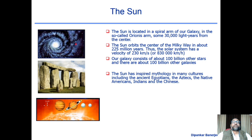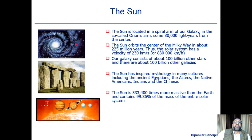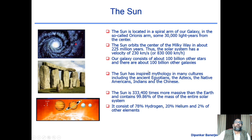The sun is 330,000 times more massive than the Earth and contains 99.86% of the mass of the entire solar system. In this many-body system, the sun is so massive that all other objects are really, really tiny. The center of mass of the entire solar system is very, very close to — actually inside — the sun.